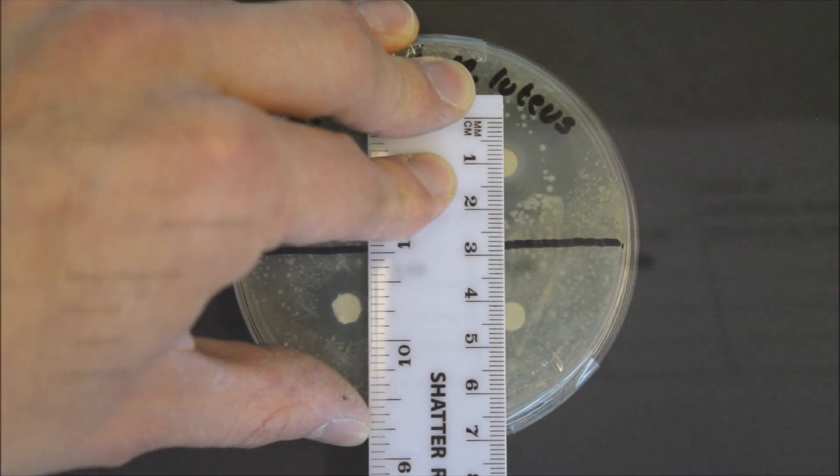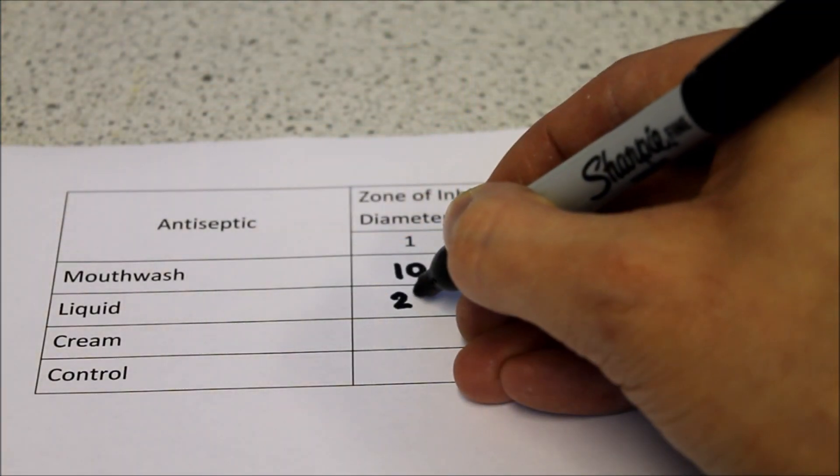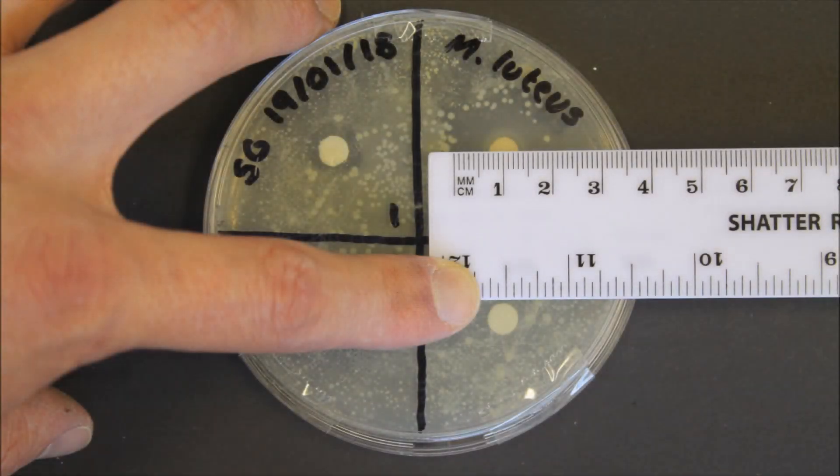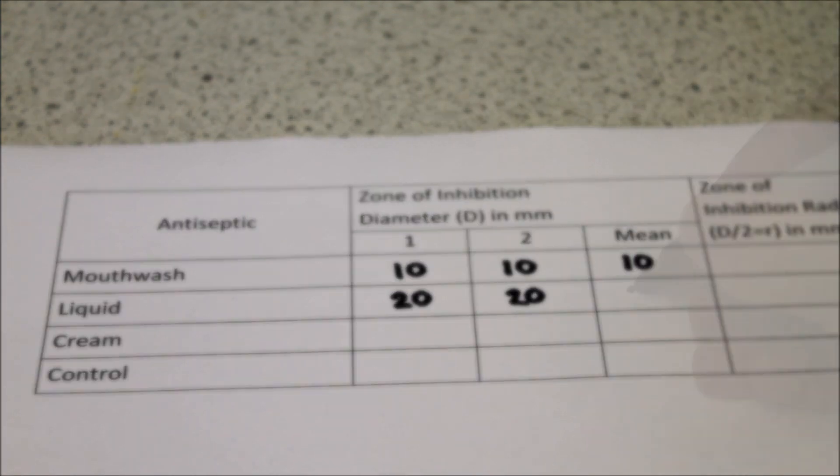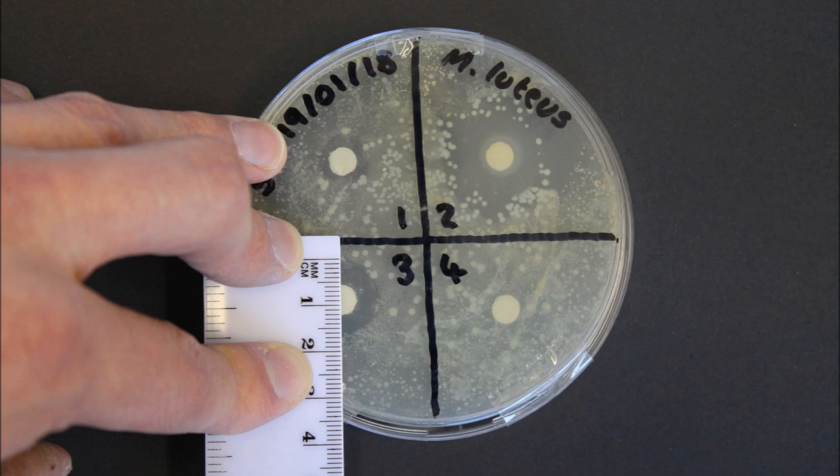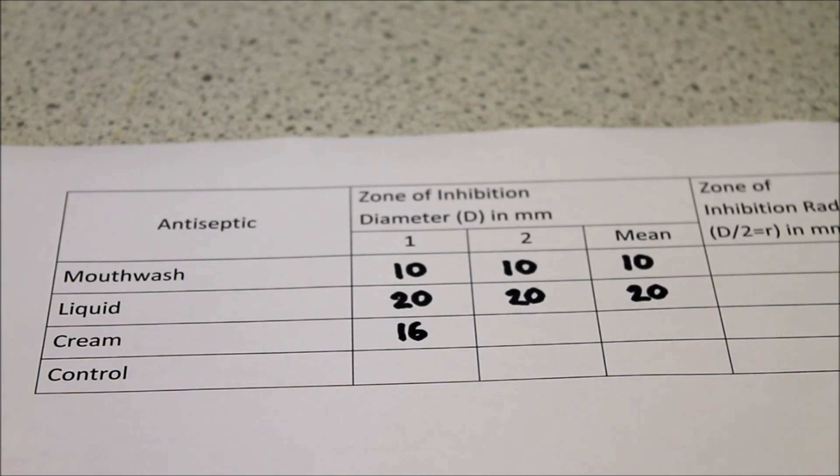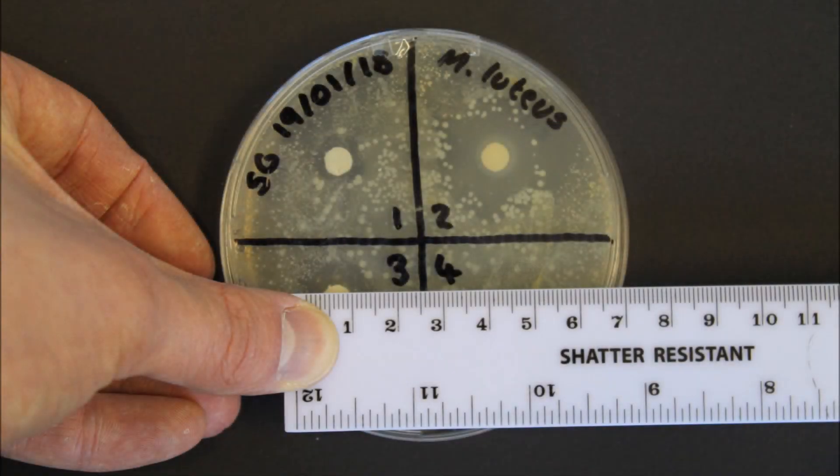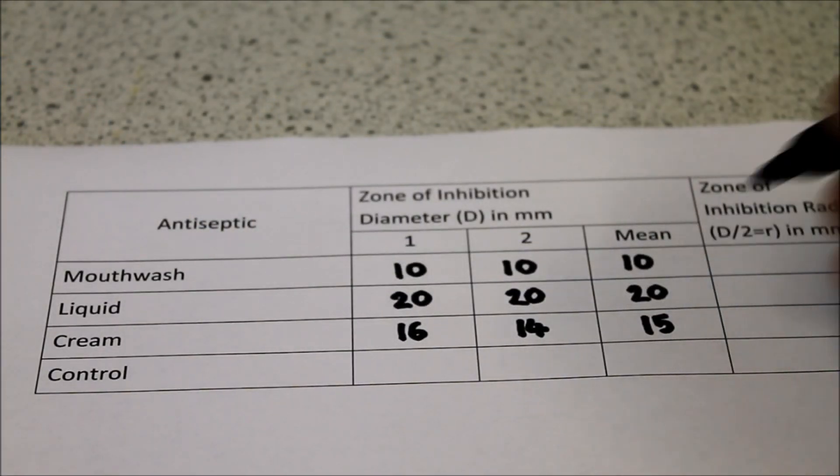The zone of inhibition is much bigger for this second antiseptic with a diameter of 20 millimeters from top to bottom and 20 millimeters across. Again the average is the same. The zone of inhibition for this third antiseptic measures 16 millimeters vertically and 14 millimeters horizontally. So the mean average diameter is 15 millimeters this time.